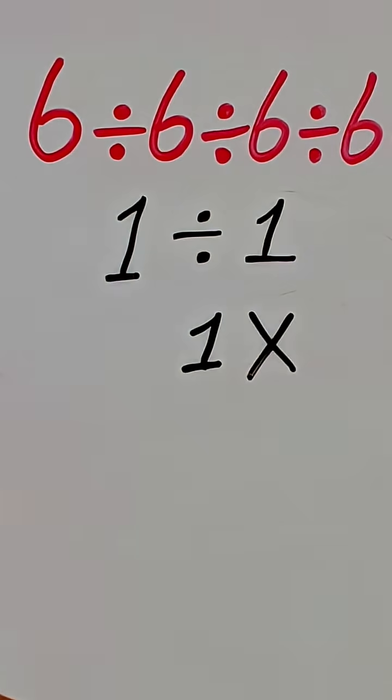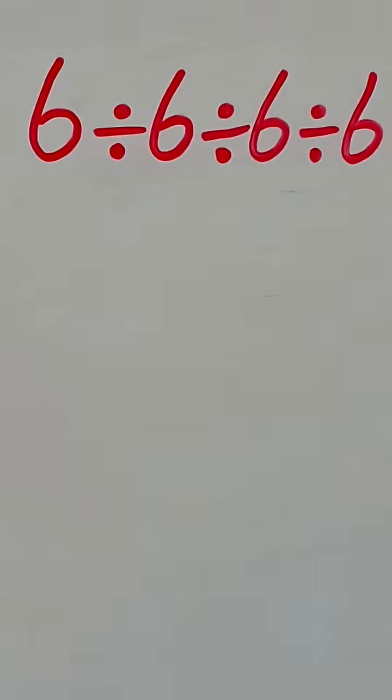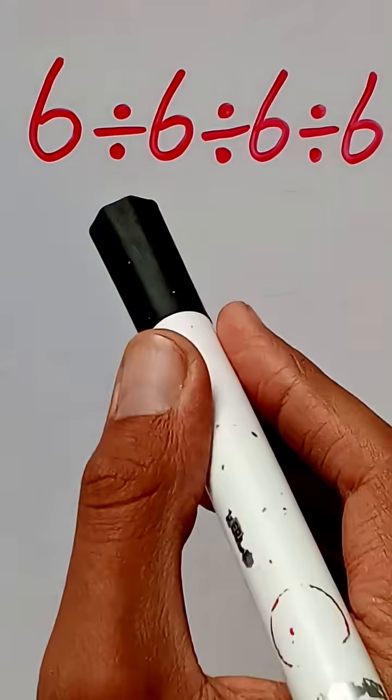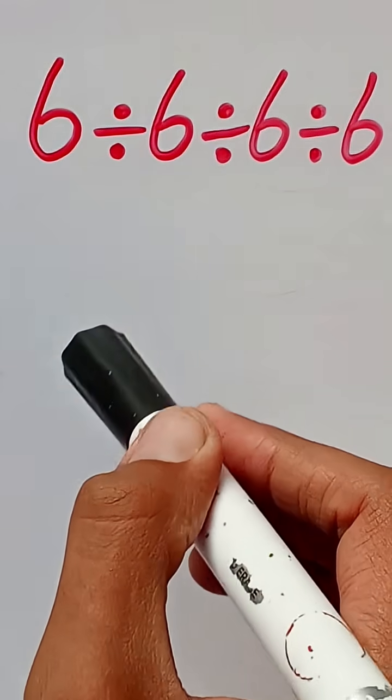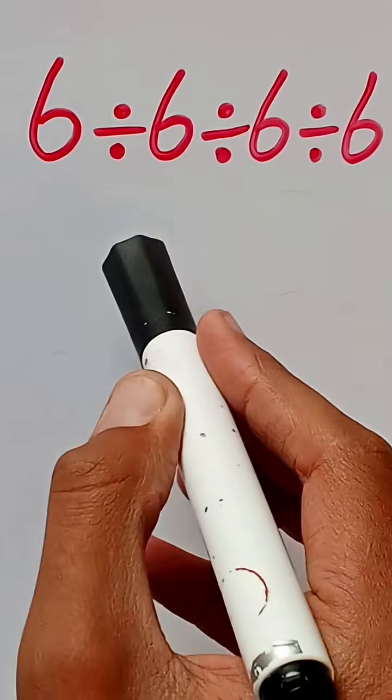But this answer is wrong because of the order of operations, which is called the PEMDAS rule. According to the rule of PEMDAS, whenever in an expression there are more than one division, then we solve it from left to right.